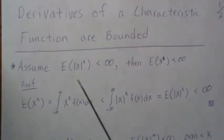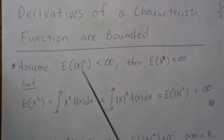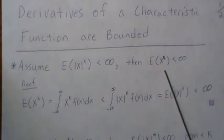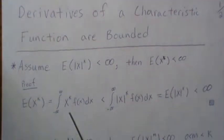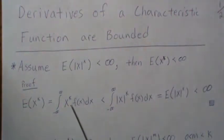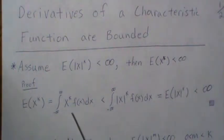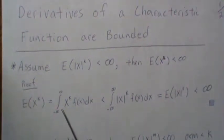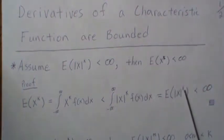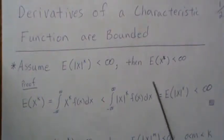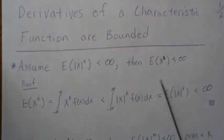The first background point: if we assume that the absolute value of the k-th moment is finite, then that implies that the k-th moment is finite. A simple proof is that the absolute value of the k-th moment satisfies |E[X^k]| ≤ E[|X|^k]. Since |x|^k is always positive and x^k can be positive or negative, and E[|X|^k] was assumed finite, it follows that E[X^k] is also finite.